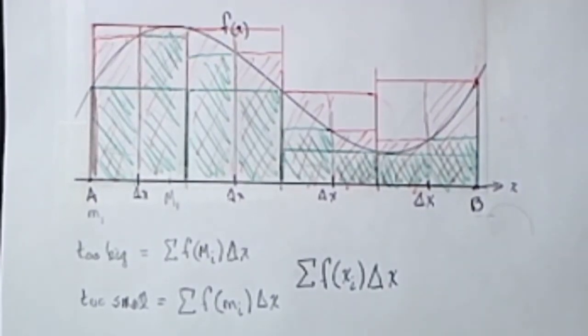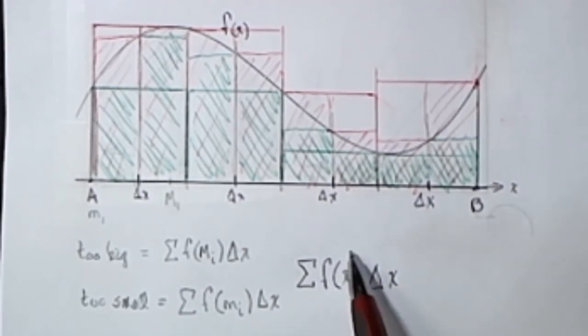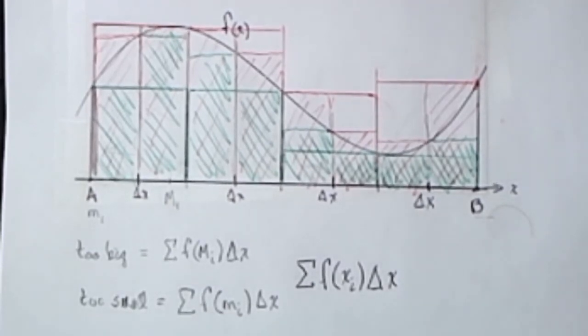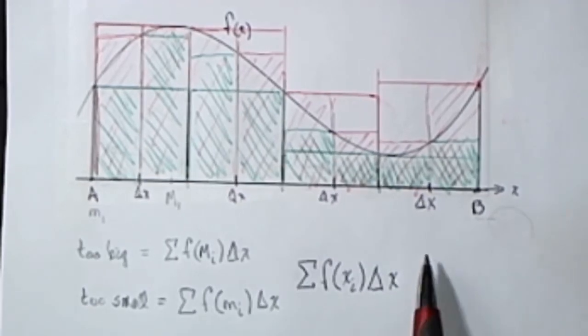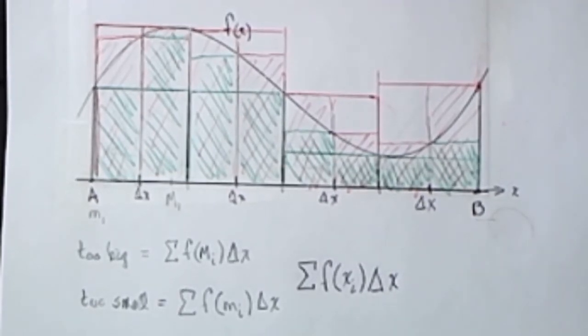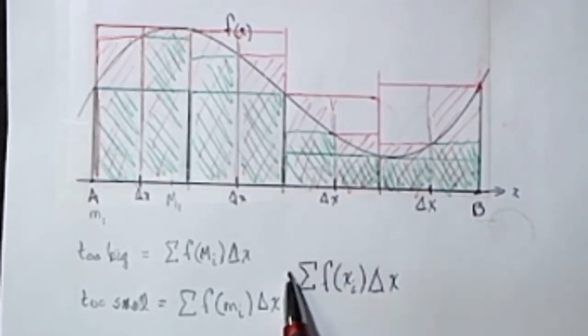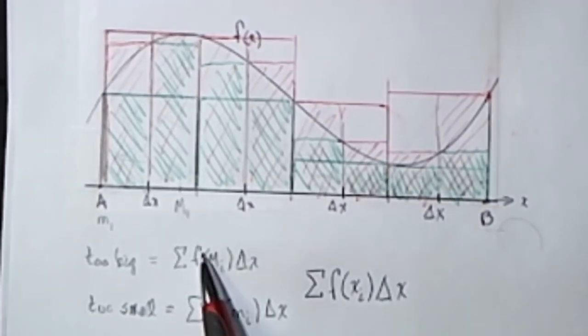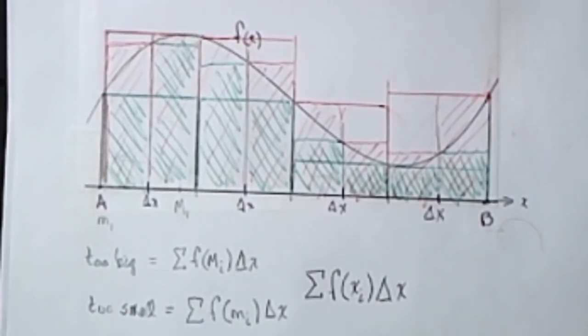So what we're going to think about is just picking any x in the subinterval, finding the height, the function at that value, times the width of that little rectangle of that subdivision, and then adding all of those up. We know that this answer will be somewhere in between a too-big estimate and a too-small estimate.